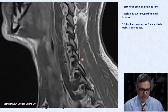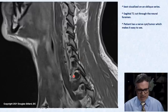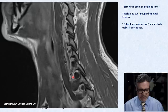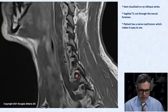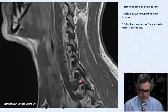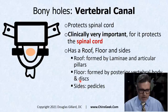Here's another oblique series. This patient has a tumor on one of the nerves — see how big it is in the hole. There are holes there but they fade out here due to a little scoliosis.